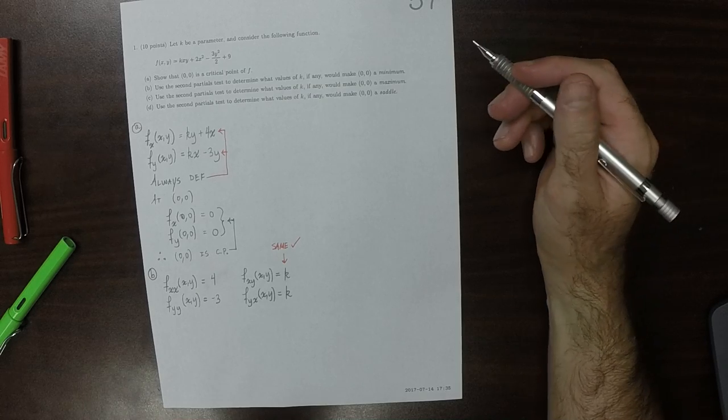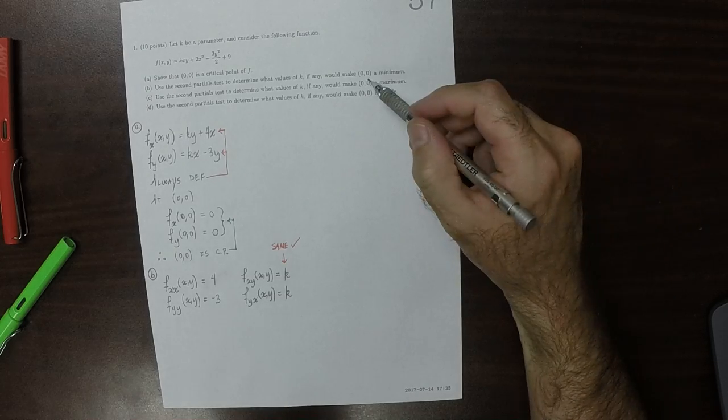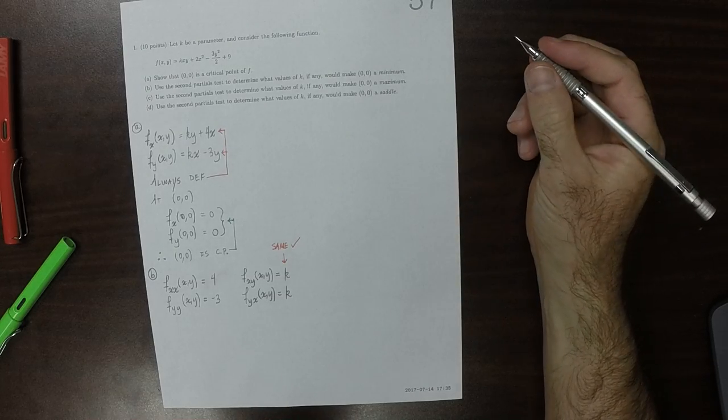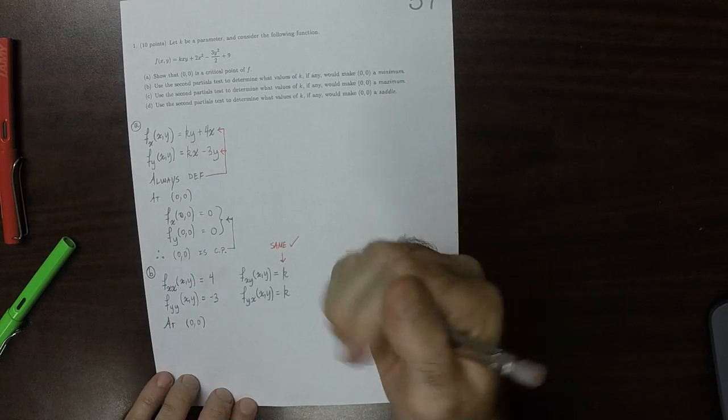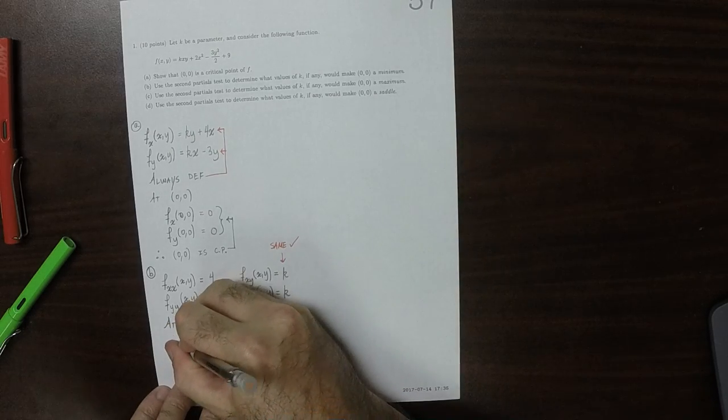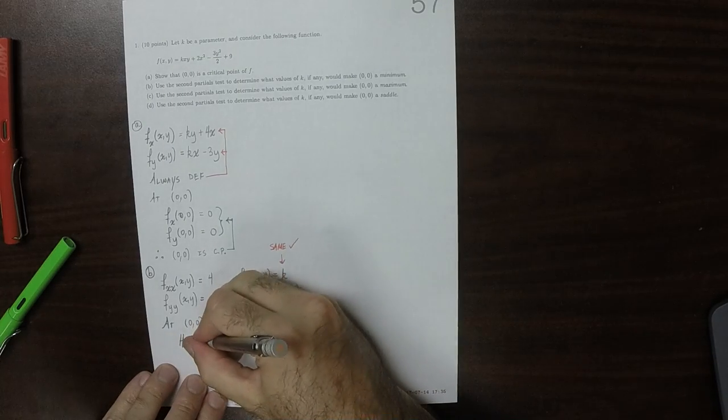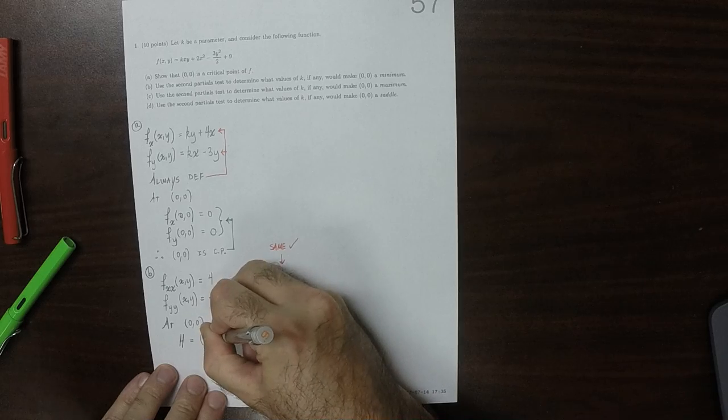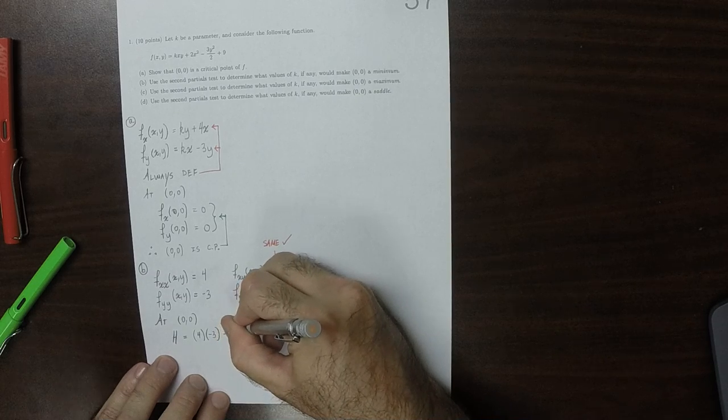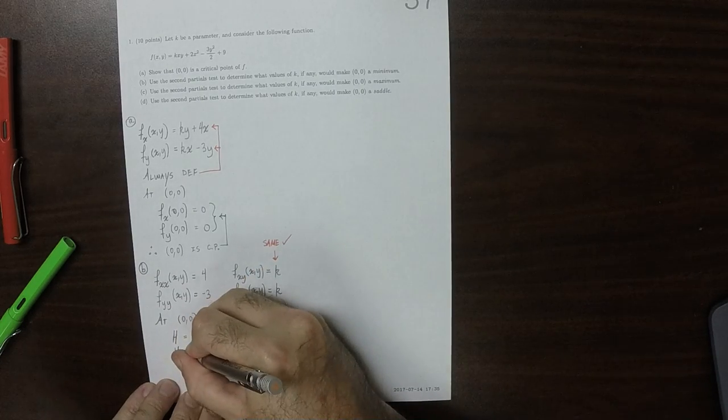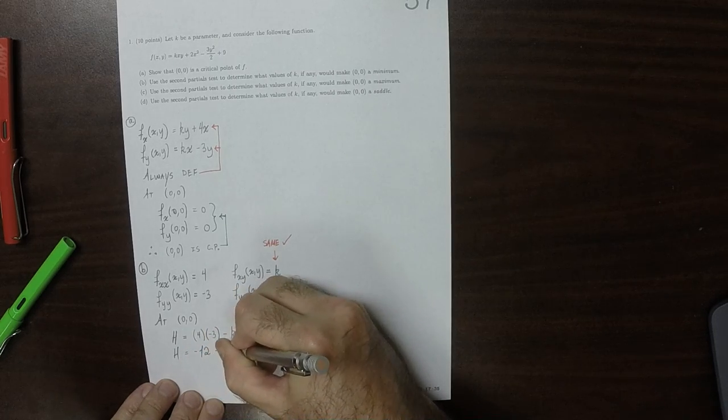So we want to know what values of k, if any, would make 0, 0 a minimum. Well, at 0, 0, the classifier h is the product of the pure partials. So that would be 4 times negative 3 and then minus the product of the mixed partials, so minus k squared. So that would be negative 12 minus k squared.